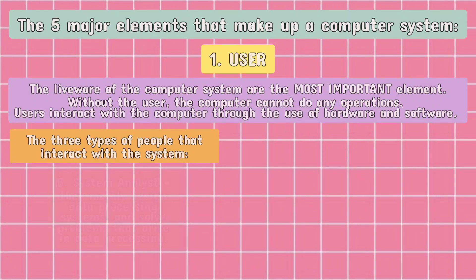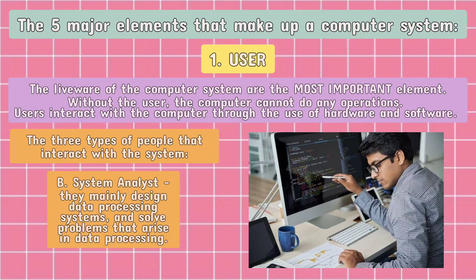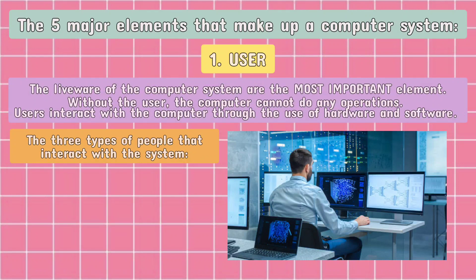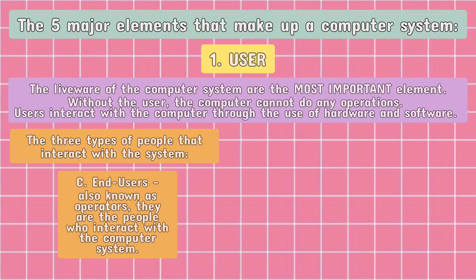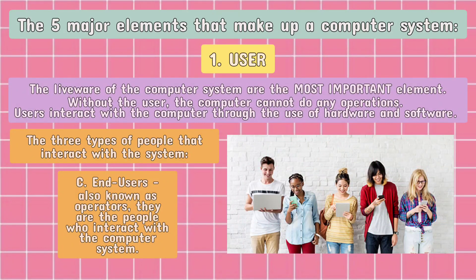Number two, system analyst. They mainly design data processing systems and solve problems that arise in data processing. And number three, end users, also known as operators. They are the people who interact with the computer system.